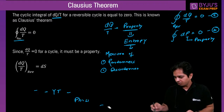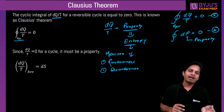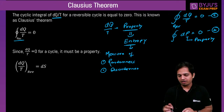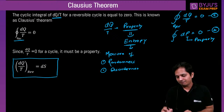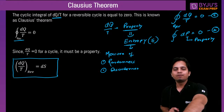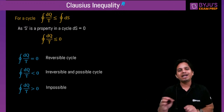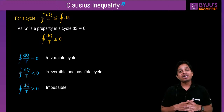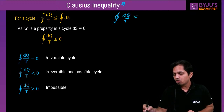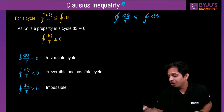This was for a cycle. For a process, I can say: integral of dQ/T is less than or equal to integral of dS. This is for a process. From here, dS is always greater than or equal to dQ/T. Write this down — it is only valid for a process. When I talk about a process, it constitutes system plus surrounding.